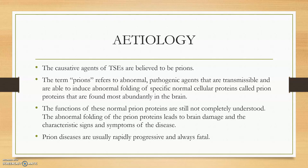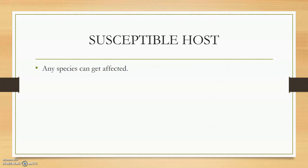These misfolded proteins are found mostly in the brain. Proteins in cells fold in an abnormal fashion, leading to pathogenesis. The functions of these normal proteins are still not completely understood. Whenever they change conformation, it leads to misfolded appearance and the disease known as prion disease. Any species can be affected.